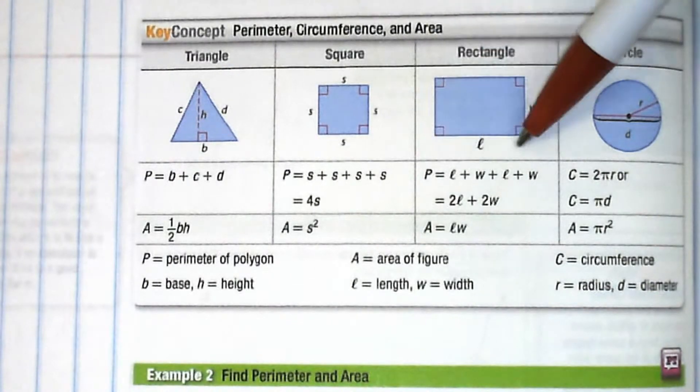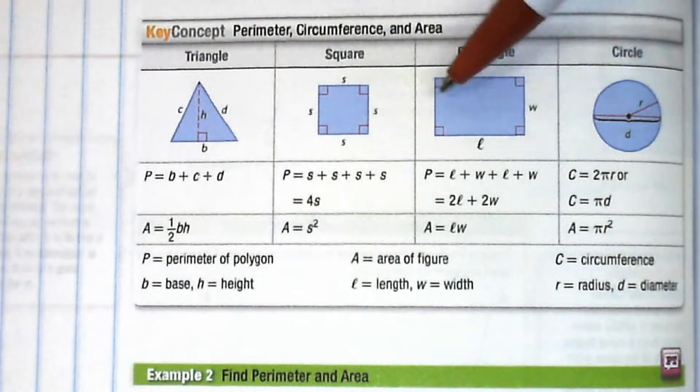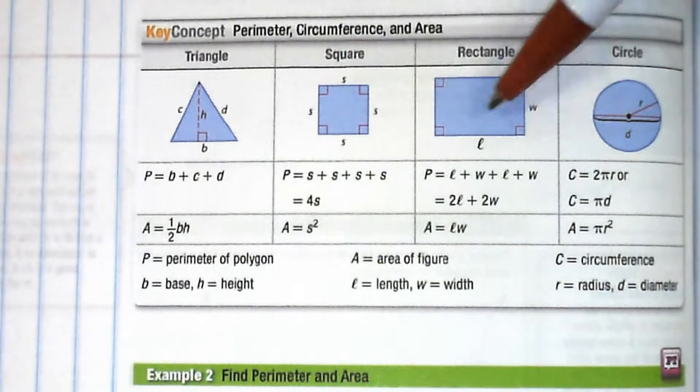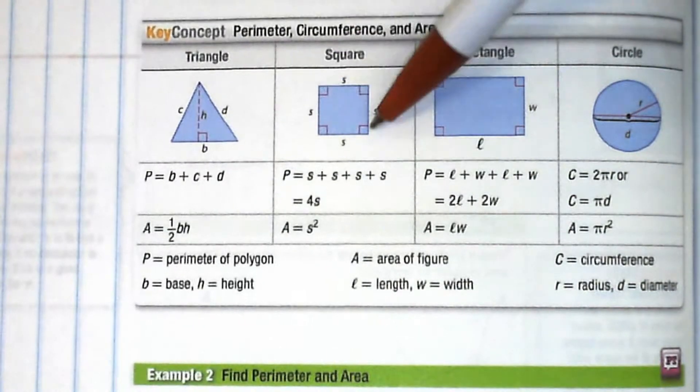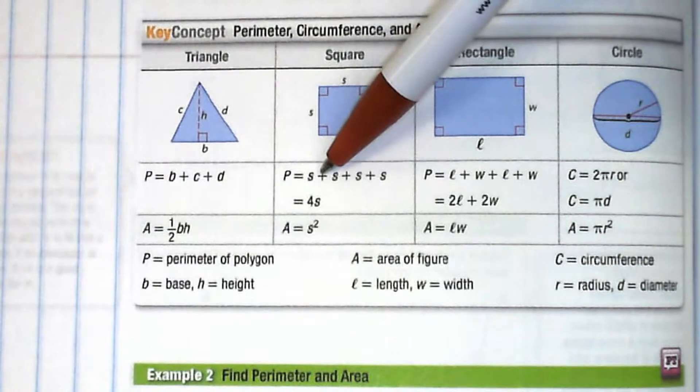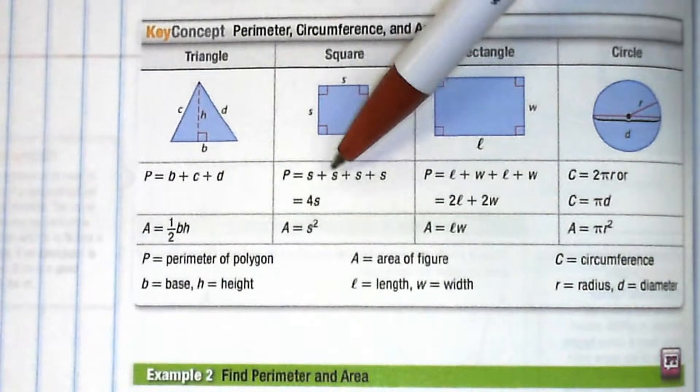For a rectangle, perimeter is the distance around the figure, so we have twice the length plus twice the width. For a square, all sides are congruent, so side plus side plus side plus side - since there's four of them we can simplify it to 4s.